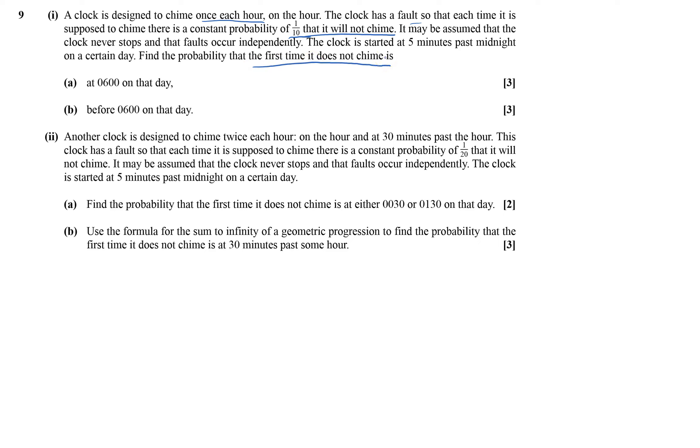Find the probability the first time it does not chime. The not chiming is the success here. So we've got X tilde, it's a geometric distribution, and the first time it doesn't chime is what we're after. Probability doesn't chime is one-tenth.